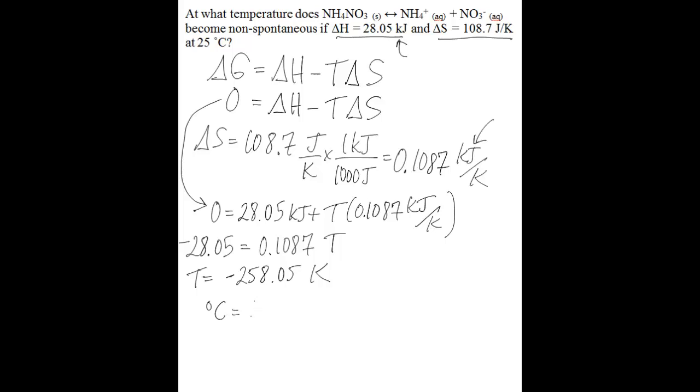So you take your negative 258.05 minus 273.15, and that's going to leave you with a value of negative 531.2 degrees Celsius.